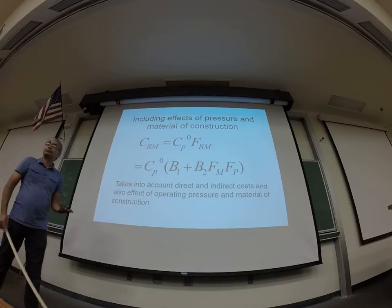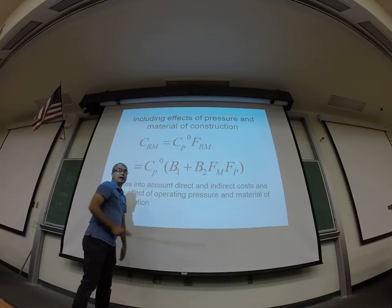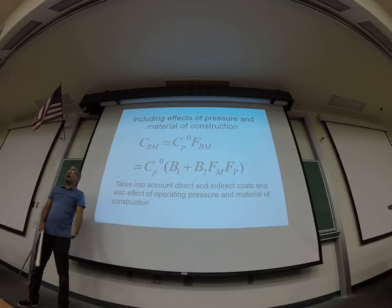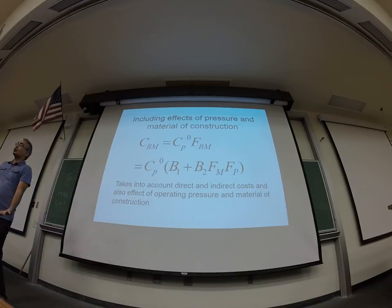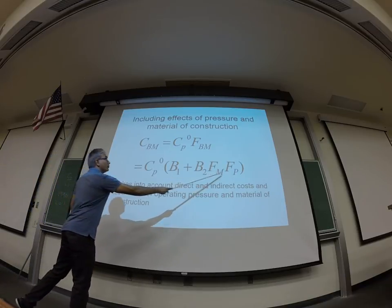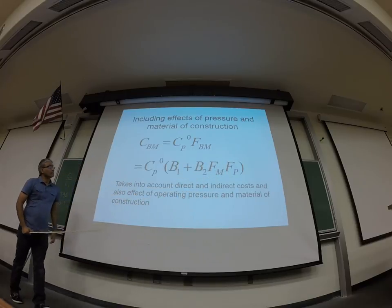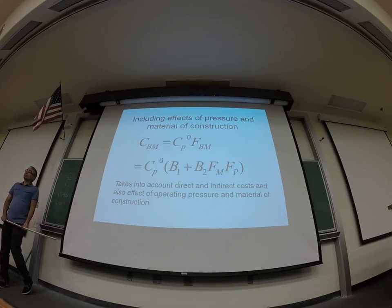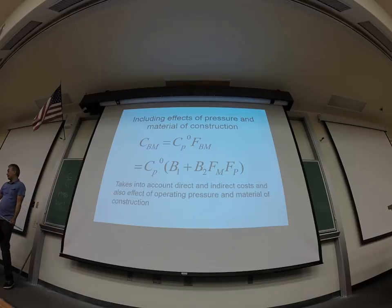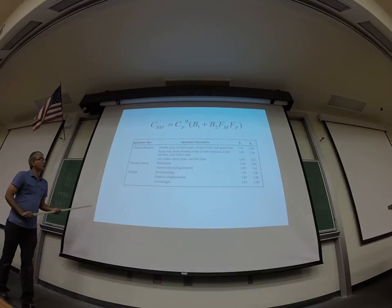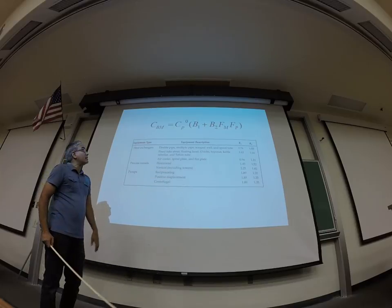FM and Fp could vary very significantly. Under base conditions, they're going to be one. They could be considerably higher depending upon what sort of conditions you're looking at. If you're working at very high temperature, FM could be high. If you're working with very high pressures or at full vacuum, Fp could be high. Okay? All right. Any questions? Okay. So let's now figure out how do we find out all these parameters. And let's keep track of how many parameters.